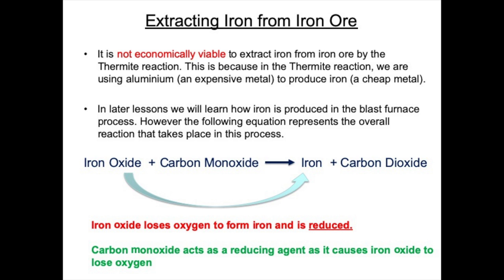If you want to extract iron on a large scale, you would not use aluminium — you would use a reducing agent such as carbon monoxide. This process is called the blast furnace process, which we will cover in later lessons. In this process, iron oxide reacts with carbon monoxide and you form iron and carbon dioxide. The iron oxide loses oxygen to form iron and is reduced; carbon monoxide gains oxygen to form carbon dioxide and is oxidised. Carbon monoxide is called a reducing agent in this process because it steals oxygen from iron oxide to leave iron. Carbon monoxide is able to do this because it is unstable and readily reacts with oxygen to form carbon dioxide — that's what makes it a good reducing agent.